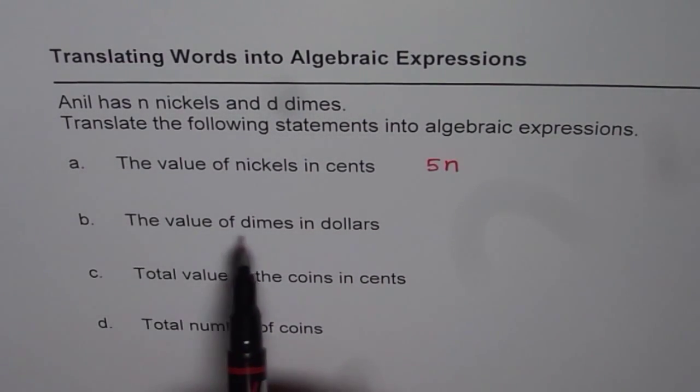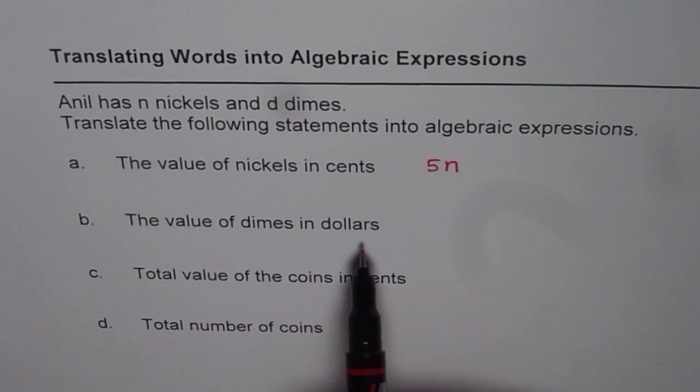Part B is value of dime in dollars. Dimes is 10 cents. Now, 10 cents means 0.10 dollars, right?